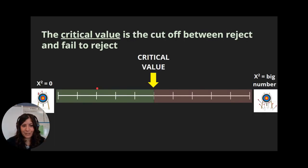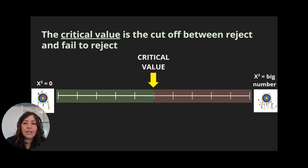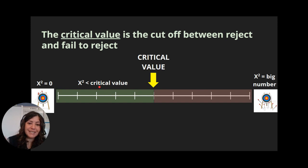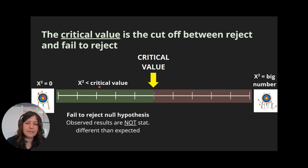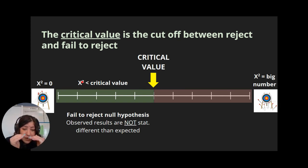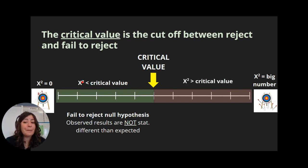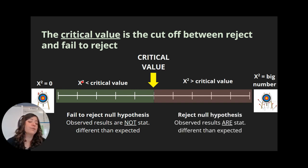There has to be some sort of threshold between zero and where we decide if it's big enough, and that threshold is called the critical value. If our chi-squared value is less than the critical value, then we're saying it's close enough to the target — we fail to reject the null hypothesis. On the other hand, if our chi-squared is bigger than the critical value, then we're too far off from the target, so we reject the null hypothesis and those observed results are different than what we expected.